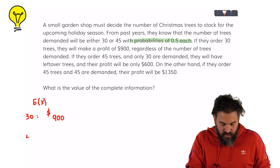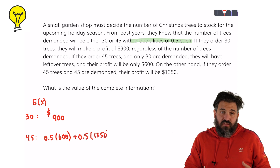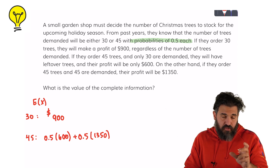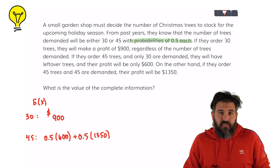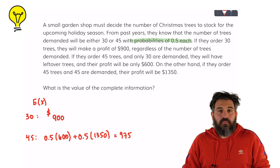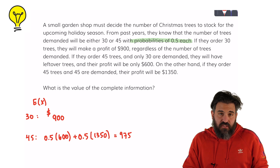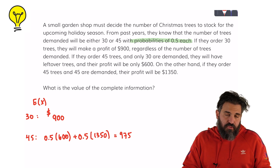Now if I order 45 trees there's a 50% chance that I only make $600 and a 50% chance that I make $1,350. That's because there's a 50% chance that there's demand for 30 trees, in which case I'd make $600, and a 50% chance that there's demand for 45 trees, in which case I would make $1,350. So this expected return is $975. Without having the complete information, the only thing you can do is base yourself on the expected return, so we would probably order 45 trees since the expected return is higher.